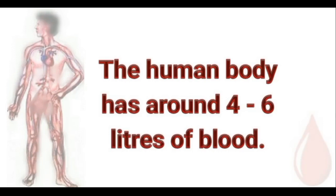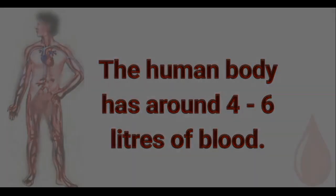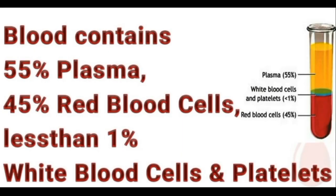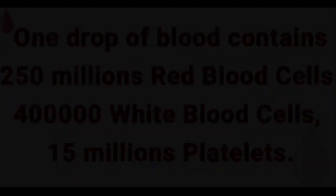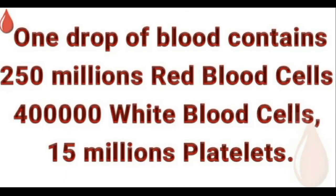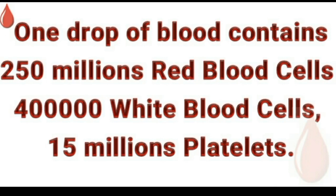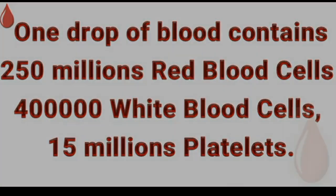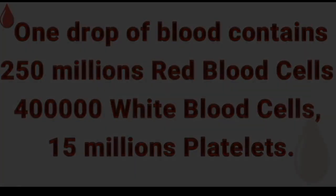The human body has around 4 to 6 liters of blood. Blood contains 55% plasma, 45% red blood cells, less than 1% white blood cells, and platelets. One drop of blood contains 250 million red blood cells, 400,000 white blood cells, and 15 million platelets.